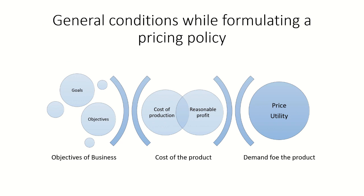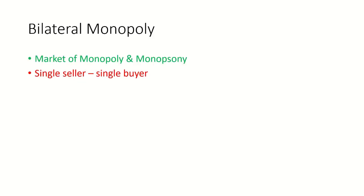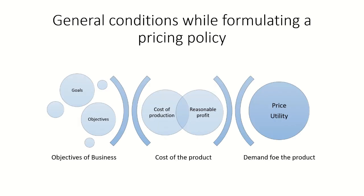Now we are going to discuss the general conditions while formulating a pricing policy. First, when we determine the price, we must consider the objective of the business — the price should address the objective of the business. The second condition is the cost of the product.